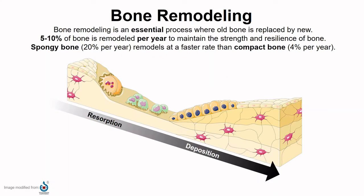So after growth is completed, bone does not suddenly become stagnant. Bone remodels constantly throughout our lives. It'll change shape and maintain its strength and resilience. The remodeling process clears out old bone that may have a weaker blood supply or a weaker structure with new, healthy bone.